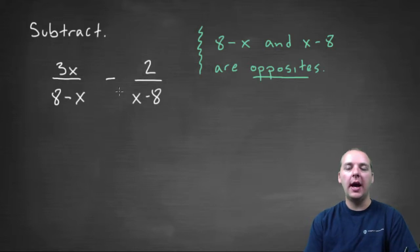Let's talk about what happens when you're adding or subtracting two different rational expressions where the denominators are actually opposites of each other.